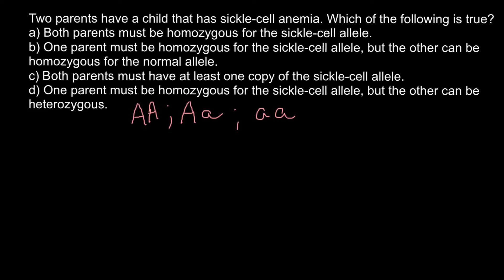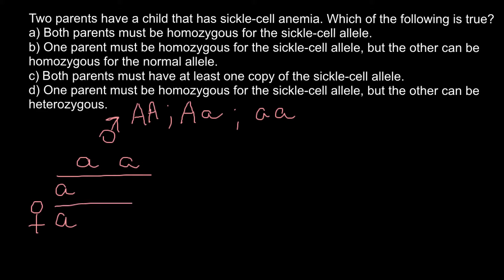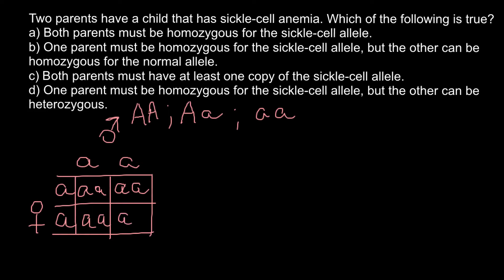Let's check answer A: both parents must be homozygous for the sickle cell allele — that is, small a, small a. If we build the Punnett square with this genotype for both parents, we would see that 100% of the progeny would also be homozygous recessive and affected with this genetic disorder.